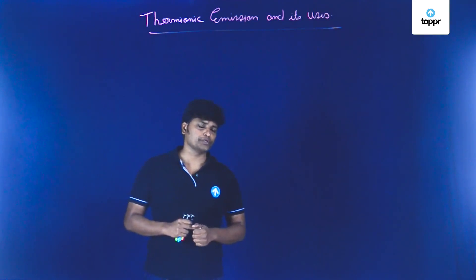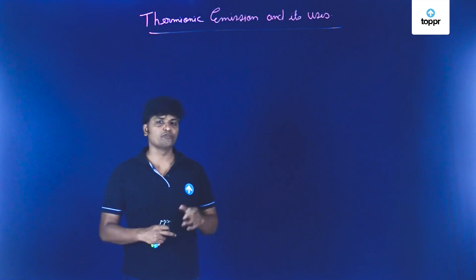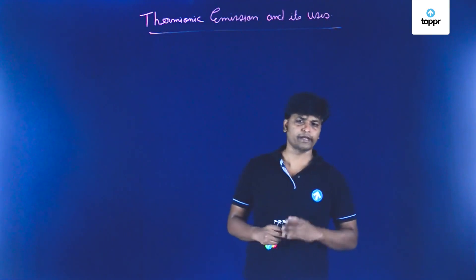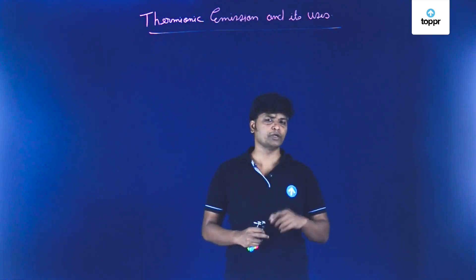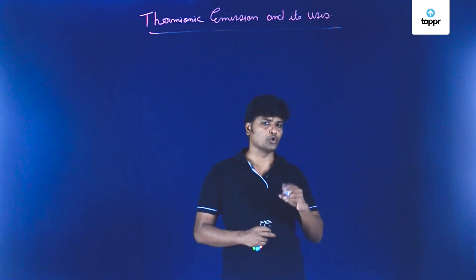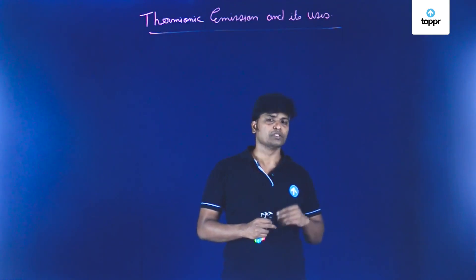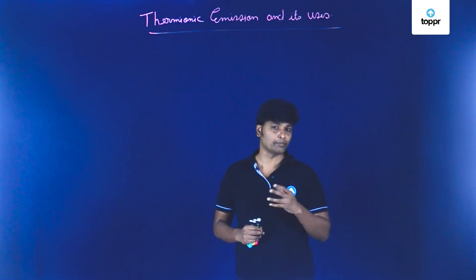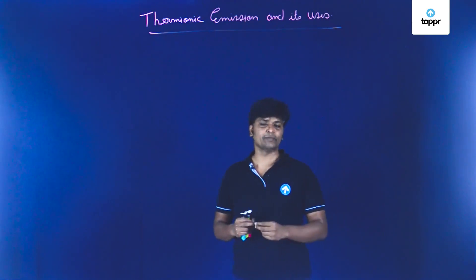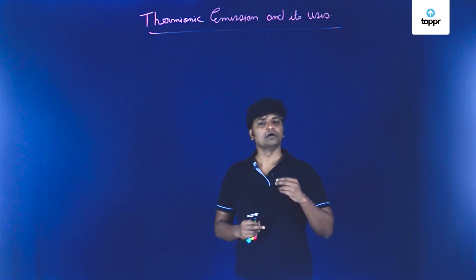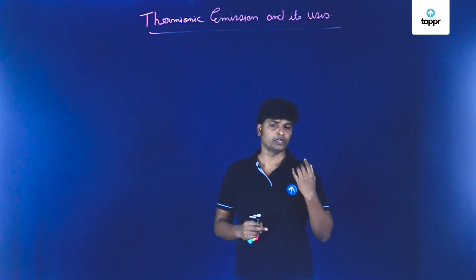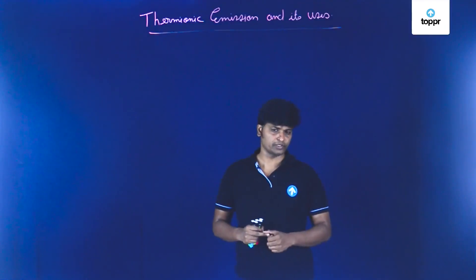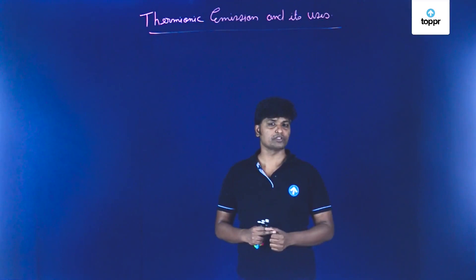Let us understand the uses of thermionic emission. The electric filament bulb — you might have seen an electric bulb with a filament glowing inside it. The moment we supply electricity to that filament, the filament gets heated up. This heated filament releases electrons from it; the electrons receive energy in the form of thermal energy and leave the metal surface, which is also an example of thermionic emission.